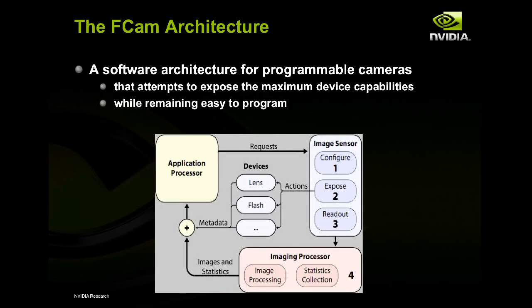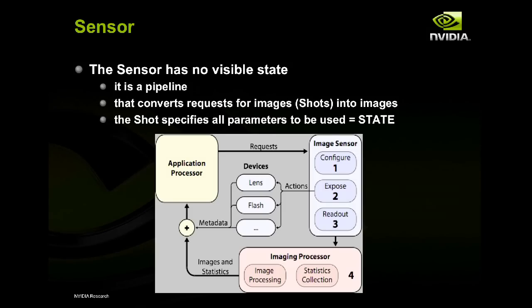So together with Nokia and Stanford and a couple of other people, we developed the FCam architecture — originally short for 'fracking camera,' though I also like to think of it as 'functional' or 'flexible camera.' It's a software architecture for programmable cameras — the idea is to give the capabilities of hardware to programmers in an easy way. The sensor is at the core of the system. We recognize it's a pipeline and it does not have a global state. Instead, state lives in these requests, which we call shots — basically a structure with all the parameters you want, bundled into a single thing that travels through the pipeline.